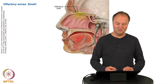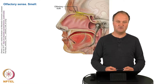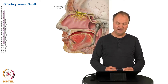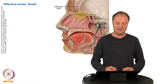In humans, this membrane is about 2 times 5 square centimeters large. This differs compared to other animals — for example, dogs have 2 times 25 square centimeters, so they are much more sensitive through their nose because they have a larger membrane.